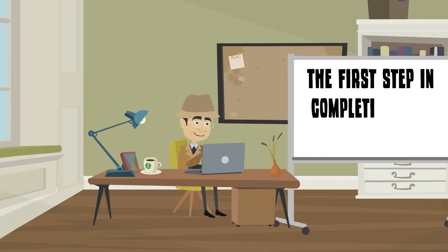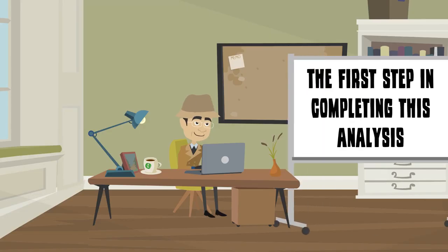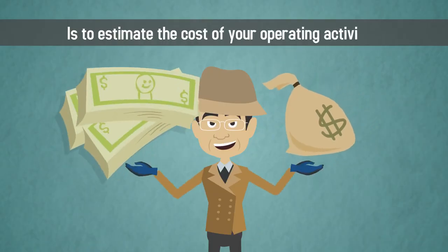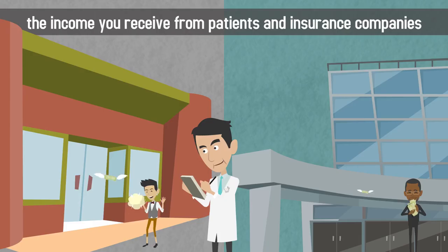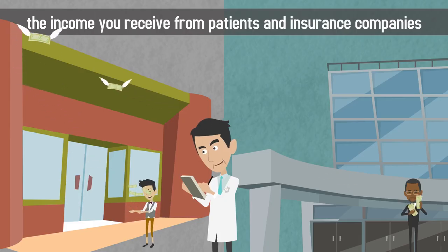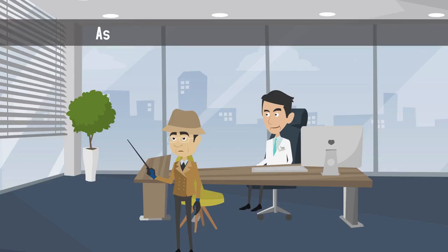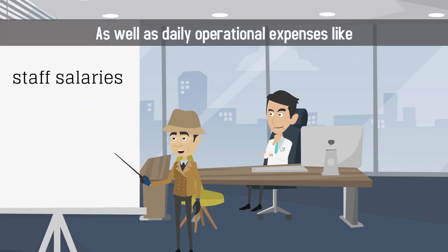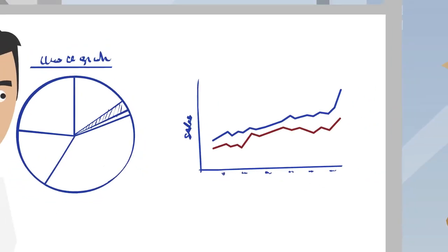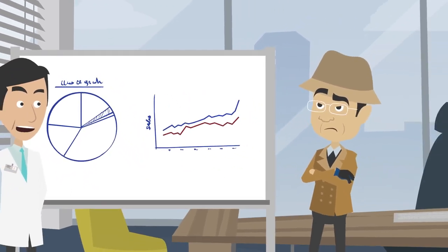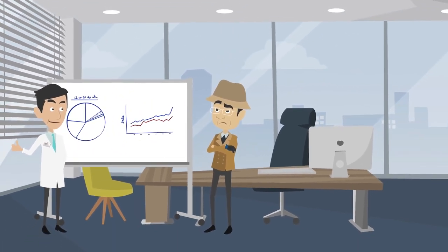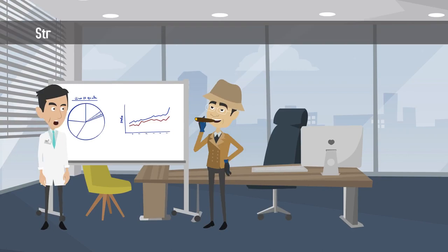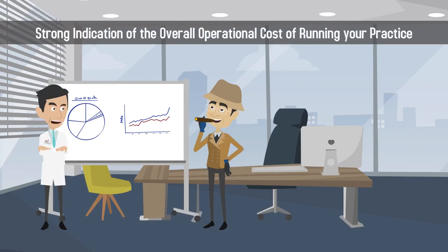The first step in completing this analysis is to estimate the cost of your operating activities. This number will include the income you receive from patients and insurance companies, as well as daily operational expenses like staff salaries, rent, and insurance. The net figure you arrive at after looking at inflow and outflow gives a strong indication of the overall operational cost of running your practice.